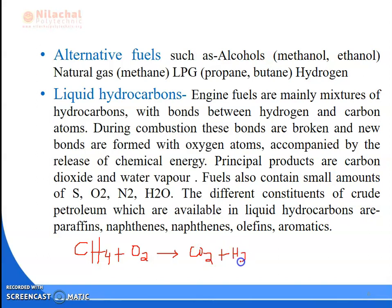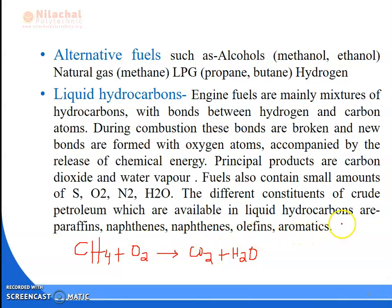We get water vapor, that is H2O. Fuels also contain small amounts of sulfur, oxygen, and nitrogen. The different constituents of crude petroleum available in liquid hydrocarbon are paraffin, naphthalene, naphthenes, olefins, and aromatics. These are also constituents we get from crude oil. Basically fuels are composed of hydrogen and carbon.